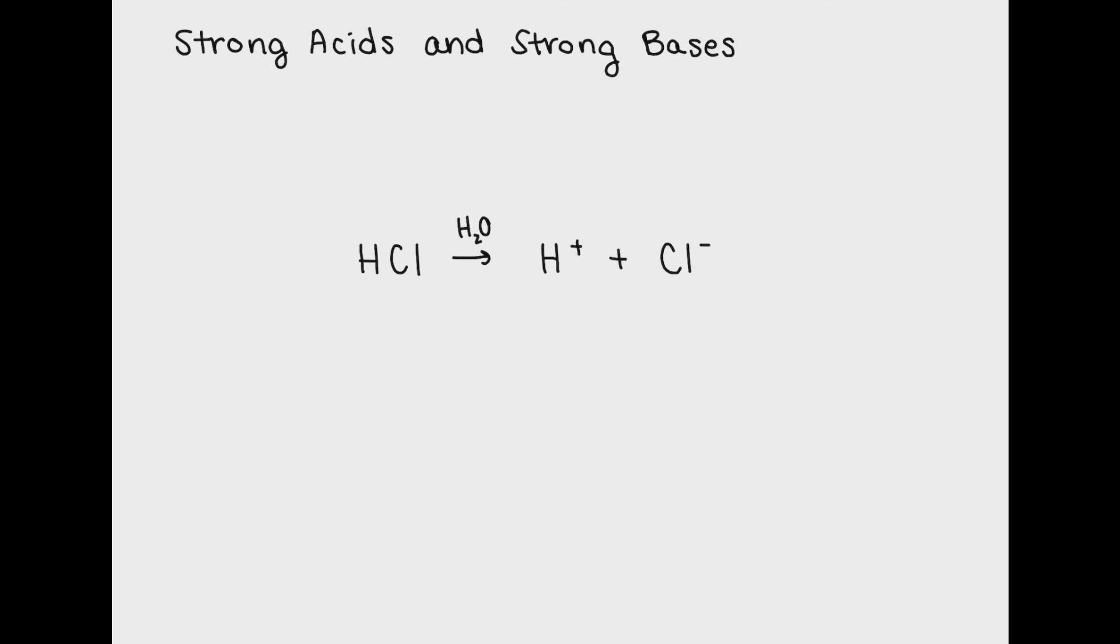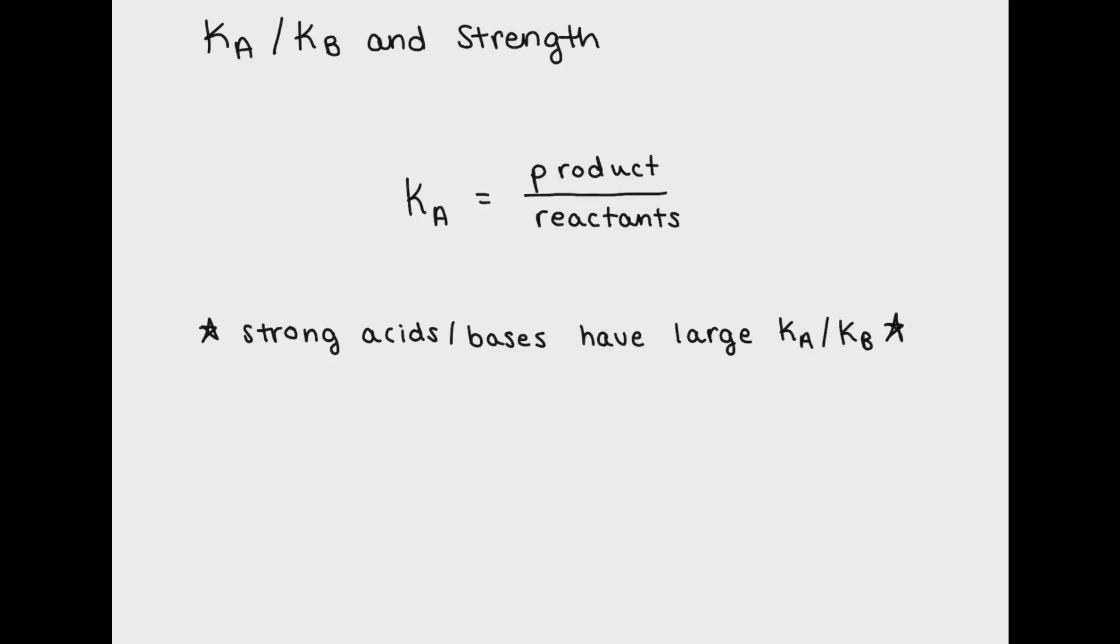Now let's talk about what this complete dissociation means for Ka and Kb values. Because the products are highly favored in a strong acid strong base dissociation, the Ka and Kb values for these will be extremely large.